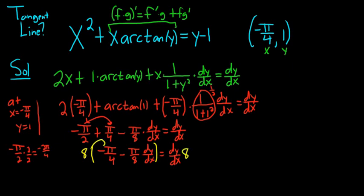So 8 times negative pi over 4 is going to be negative 2 pi. Then 8 times this, these will cancel, so this is negative pi dy dx, and that's equal to 8 dy dx.